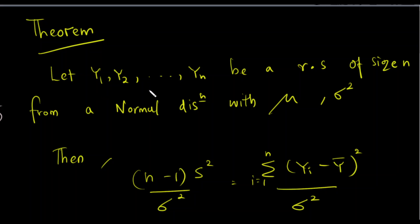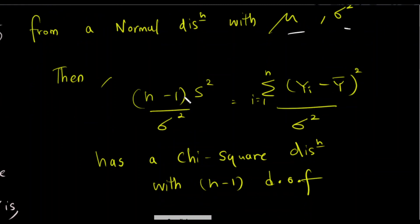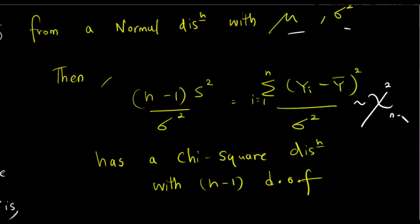If you want to use the random sample size, then you can see the normal distribution of y1, y2, yn with parameters mu and sigma squared. Let's take a look at the theorem. We see that n, sigma, and s squared are defined. This is the chi-square distribution with 1 degree of freedom.